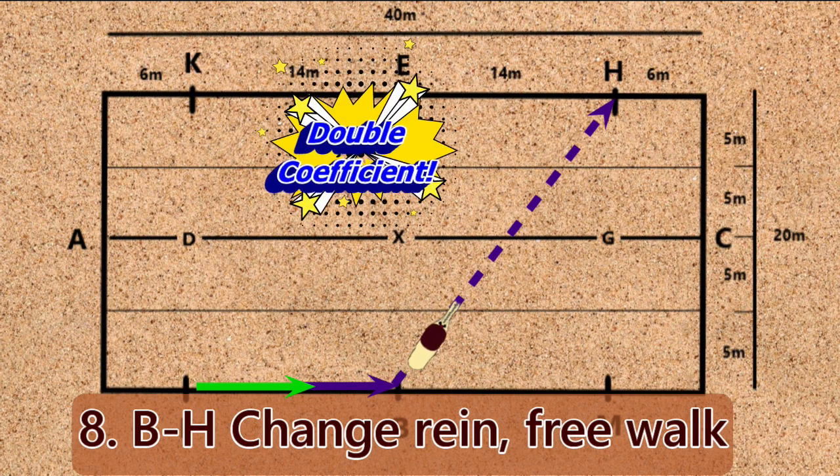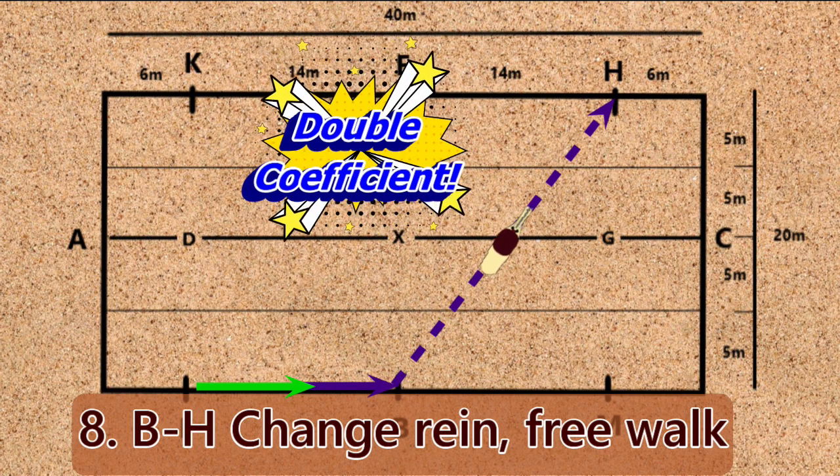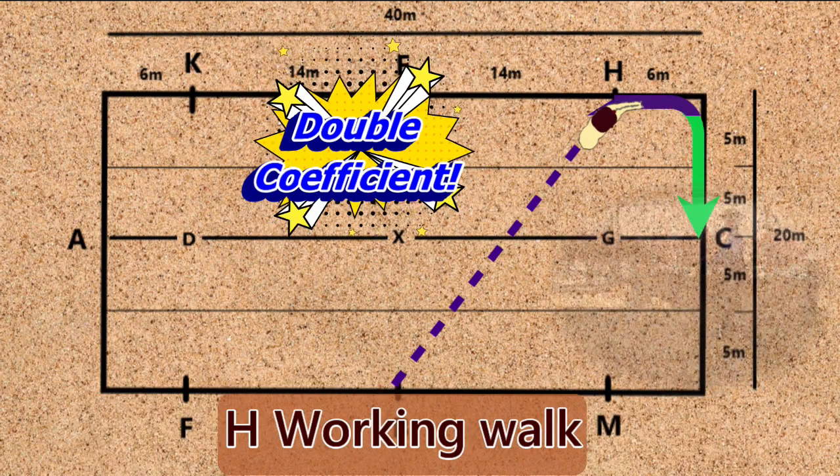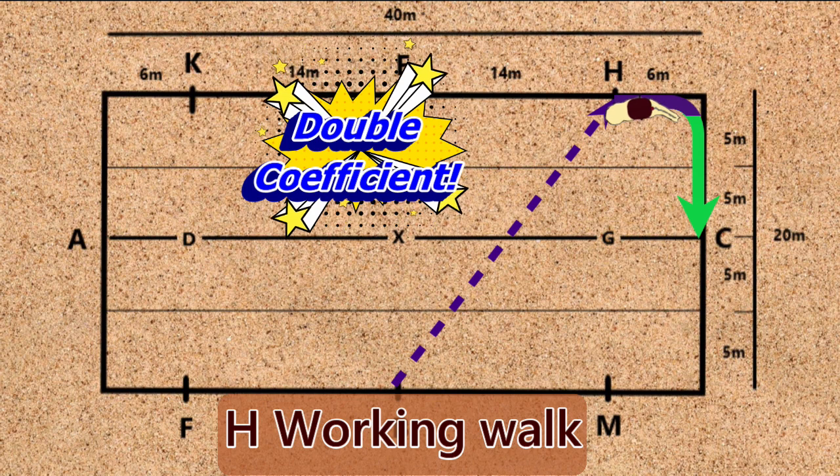Movement 8: B through H, change rein free walk. H, working walk.